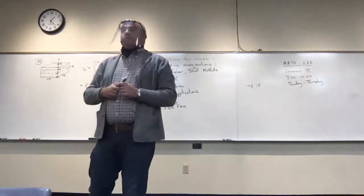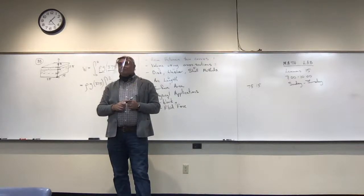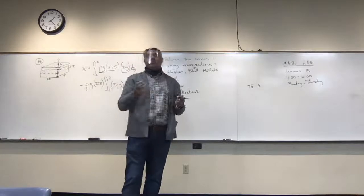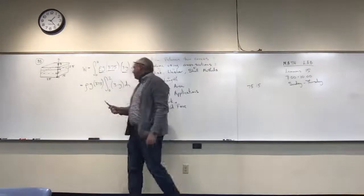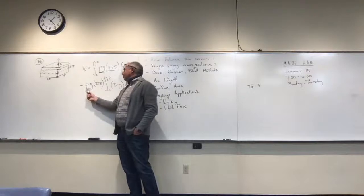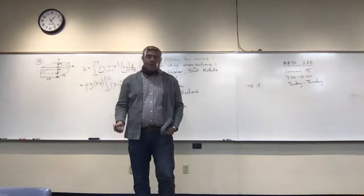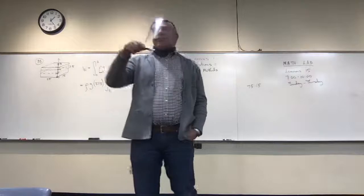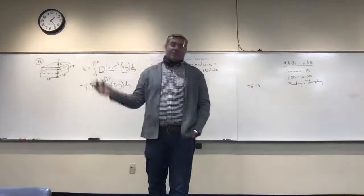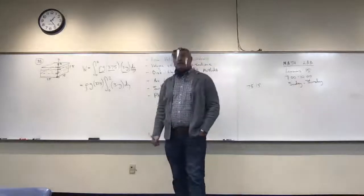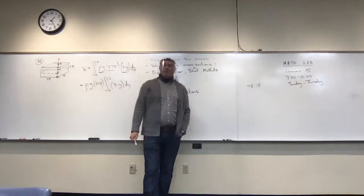A student asks about using 9800 (= ρ × g) as seen in the videos. The instructor confirms: 9800 is correct when working in meters. g = 9.8, density of water = 1000, so ρg = 9800. He mentions previously making an error by accidentally using the density of gasoline instead of water. On the exam, problems will use meters, so 9800 is the right value.